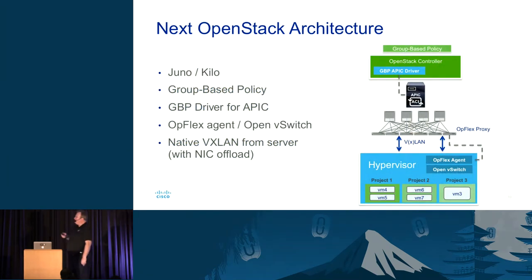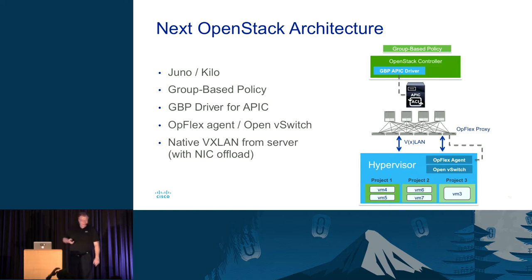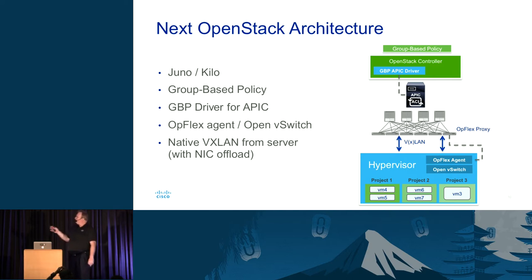Our new OpenStack architecture is going to help us solve that. Based on Juno and Kilo and group-based policies, we will integrate OpenStack with ACI and get a policy engine to help deploy applications into the cloud. We're going to be leveraging native VXLAN from the server with NIC offload for performance within the cloud.